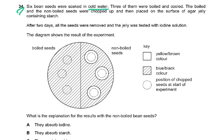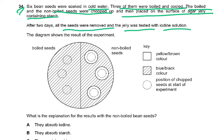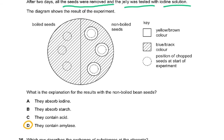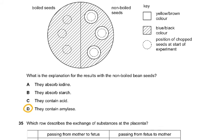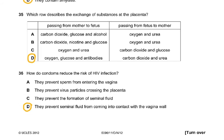Question 34: six bean seeds were soaked in cold water, three of them were boiled and cooled. The boiled and non-boiled seeds were chopped up and placed on the surface of agar jelly containing starch. After two days all the seeds were removed and the jelly was tested with iodine. The diagram shows the result. Boiled seeds on one side did not have a clear area. What was happening in the non-boiled seeds? They were secreting amylase and the starch was being digested, so the area around it would have no starch. No starch in it, when you added iodine it would remain yellow-brown. If starch was present it would turn black. What is the explanation? The non-boiled bean seeds contain amylase.